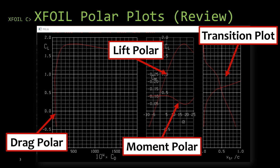Then there's the moment polar. This is the moment coefficient versus the angle of attack. The idea being if you know your angle of attack you can figure out what your moment coefficient is going to be. Then here on the right we see the transition plot, which is just showing for the upper and lower surface where the flow transitions from laminar to turbulent in respect to the location of the chord.